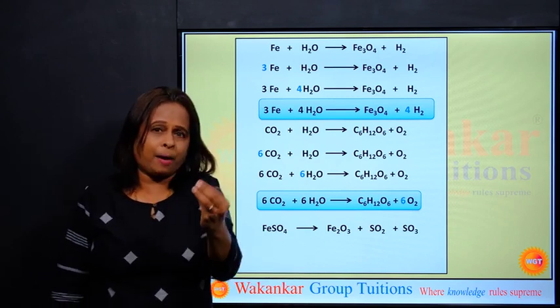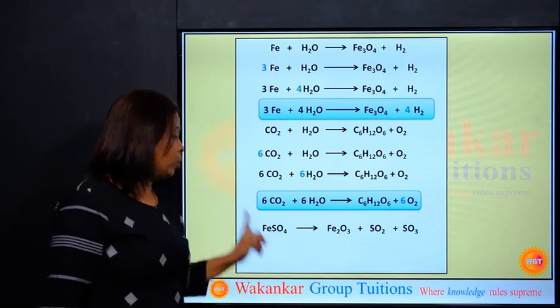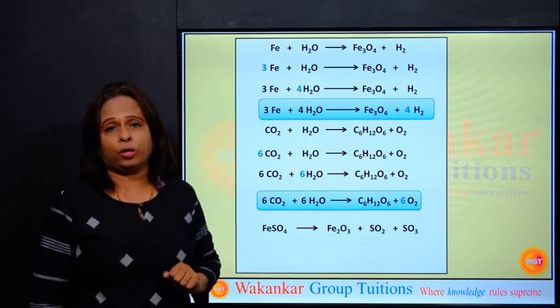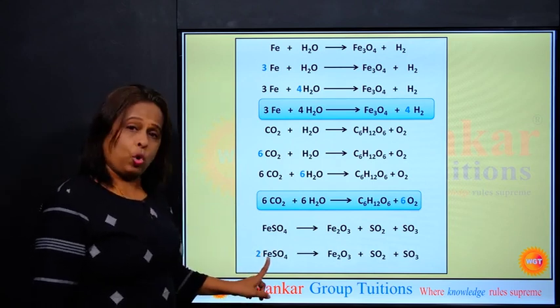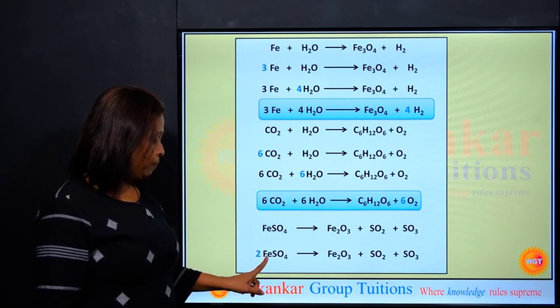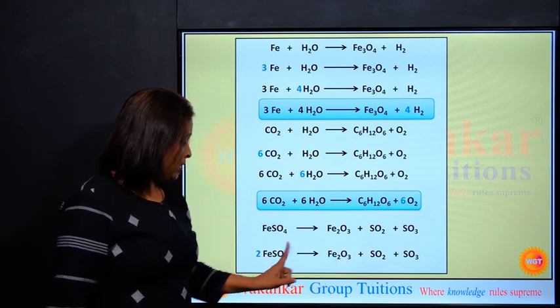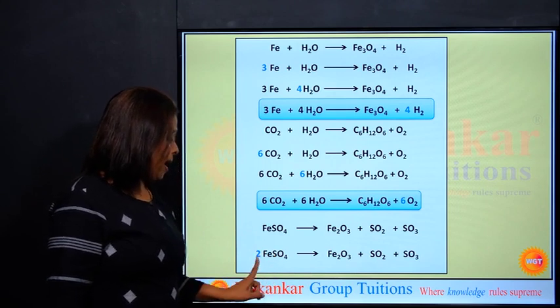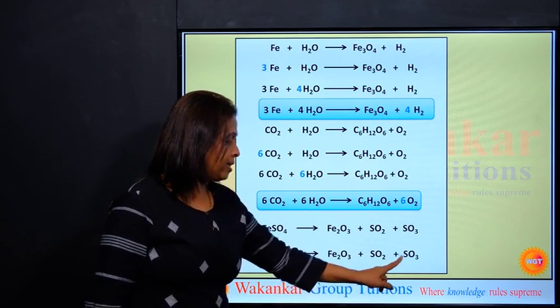Meri pehli step hogi. Main idhar dekhti hoon Fe2 hai, to main idhar 2 se multiply karungi. Let us check. I multiply by 2. When I multiply by 2, it is 2 Fe, Fe2. Sulfur 2S. How many S here children? 1 and 1, 2S.